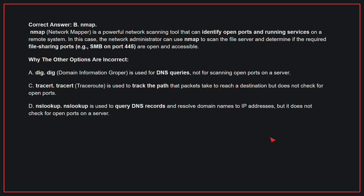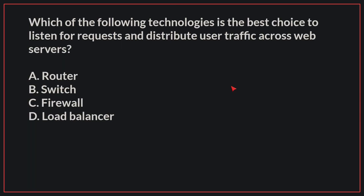Why the other options are incorrect: A, DIG, is used for DNS queries, not for scanning open ports on a server. C, TraceRT, is used to track the path that packets take to reach a destination, but does not check for open ports. D, NSLOOKUP, is used to query DNS records and resolve domain names to IP addresses, but does not check for open ports on a server. Therefore, the correct answer is B, NMAP.